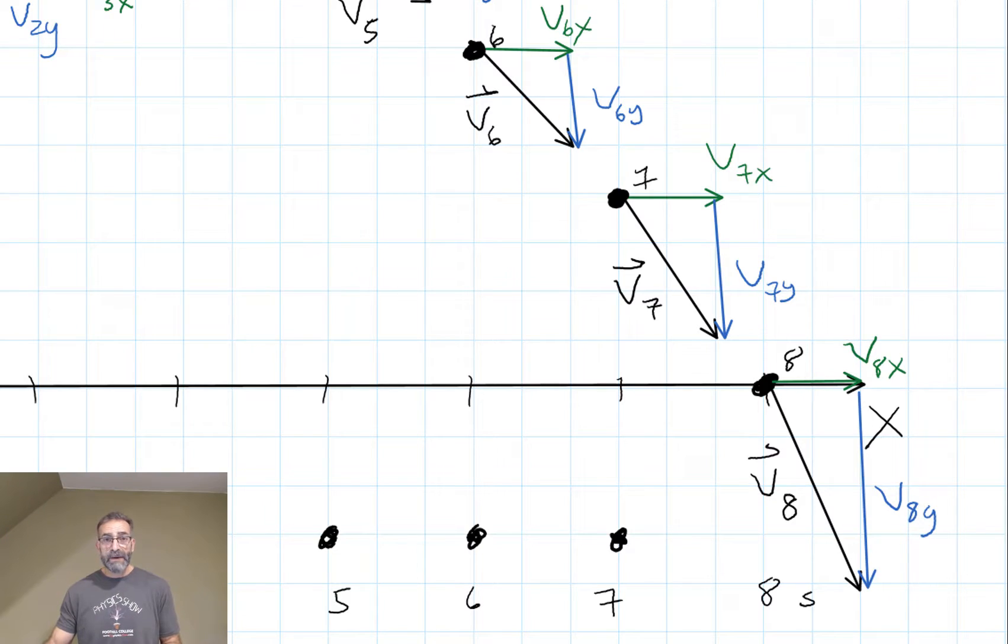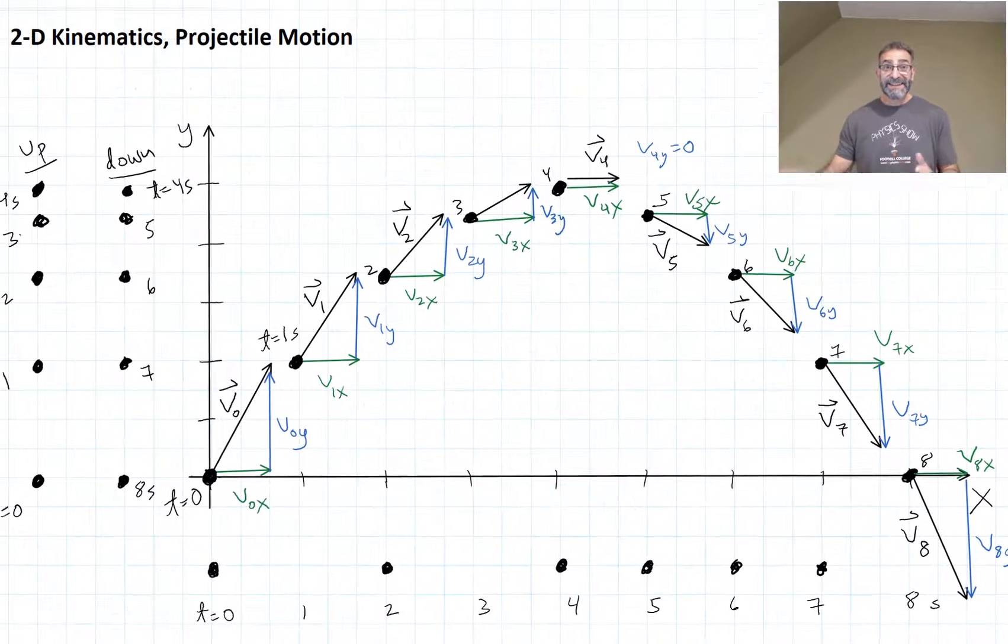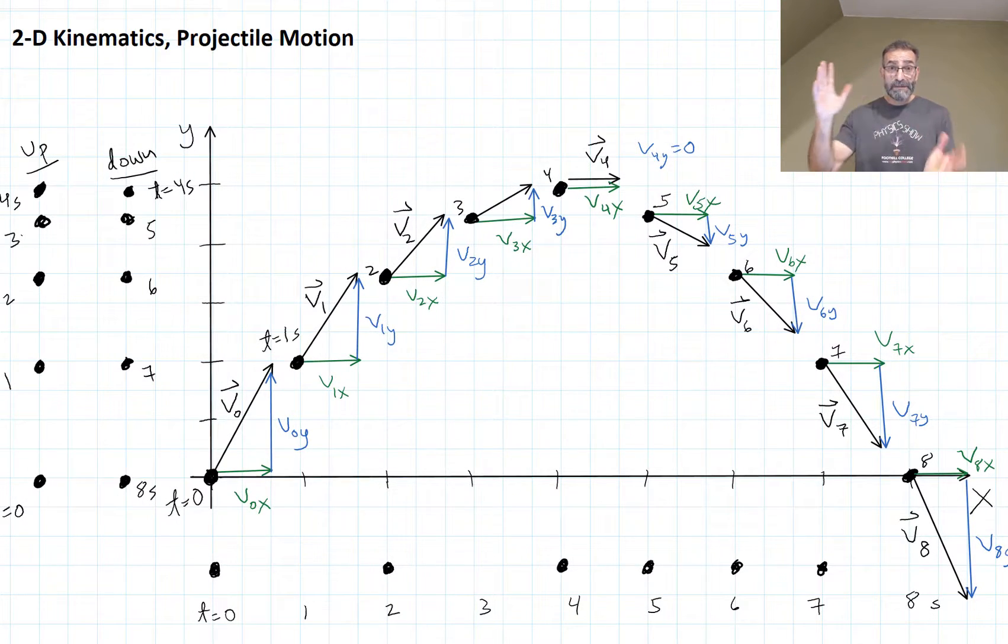So what's the takeaway from this? The fact that we can take two-dimensional kinematics problems because we're dealing with vectors. Velocity, acceleration, displacement are all vector quantities. So we can split them up into components and we can treat the x motion and the y motion, the horizontal and vertical motions, independently.